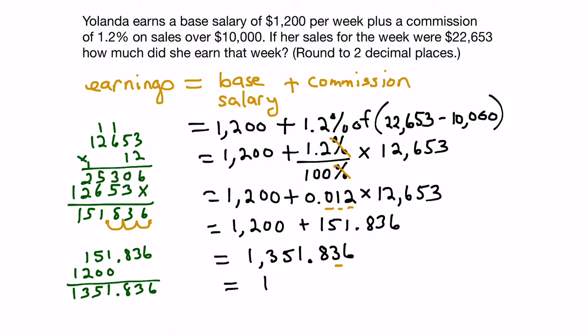And what we'll end up with is 1,351.84. And because we're talking about dollars and cents here, we'll include back in the dollar sign. And we'll figure out and answer the question, how much did she earn that week? Yolanda earned $1,351.84. And there you go.